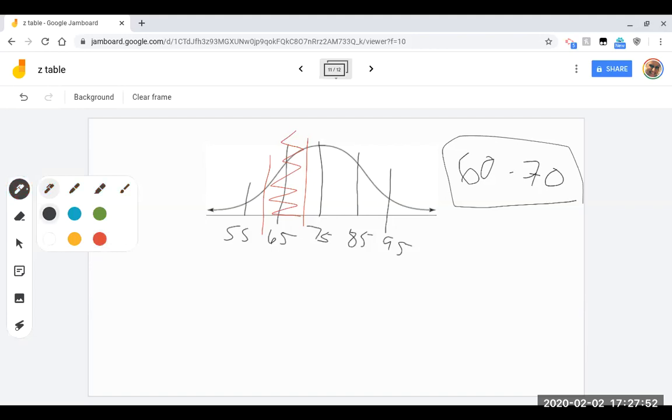Even if you're not sure what to do, just start calculating z-scores. It'll help you figure out what you need to do next. So we're going to calculate the z-score for 60. We have 60 minus 75 divided by 10. Remember that's negative 15 divided by 10, which is negative 1.5.